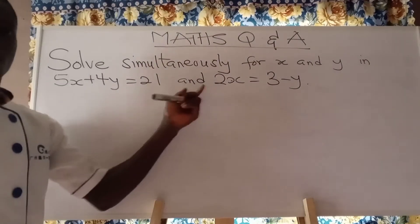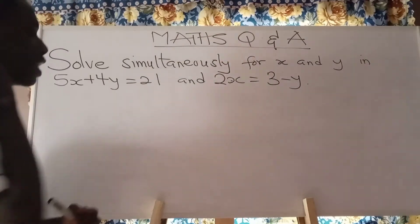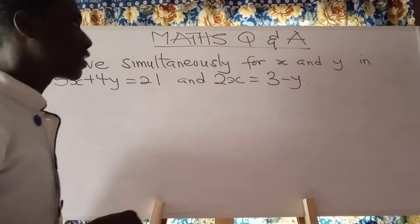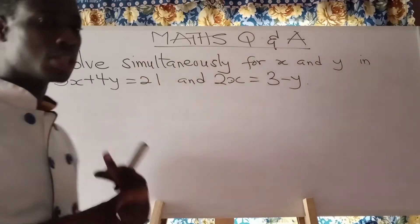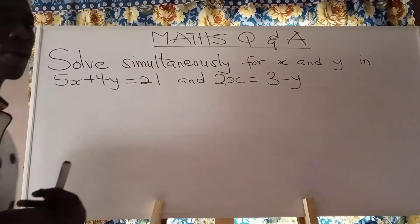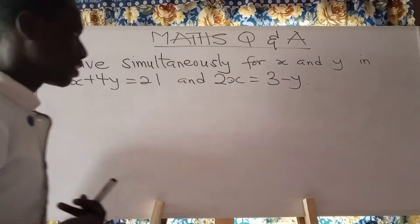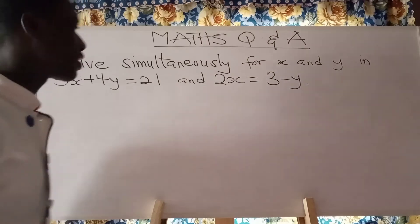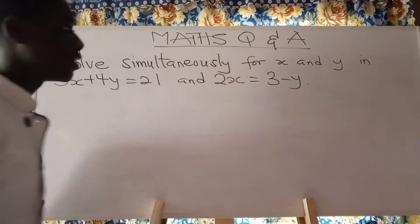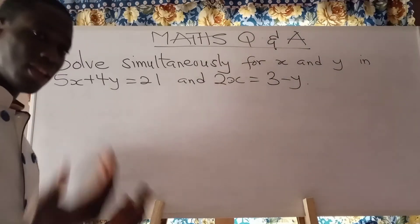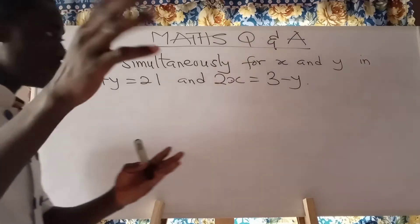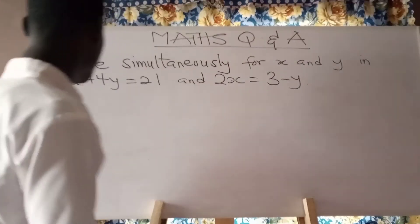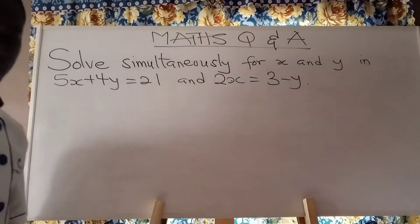To be able to solve an equation like this and find the values, we have two ways of doing it. Either you use the substitution method or you use what we call the elimination method. For simplicity's sake, let me stick to one of the methods. If you know the other one, you can also use it and compare the answers to figure out whether it's correct or not.